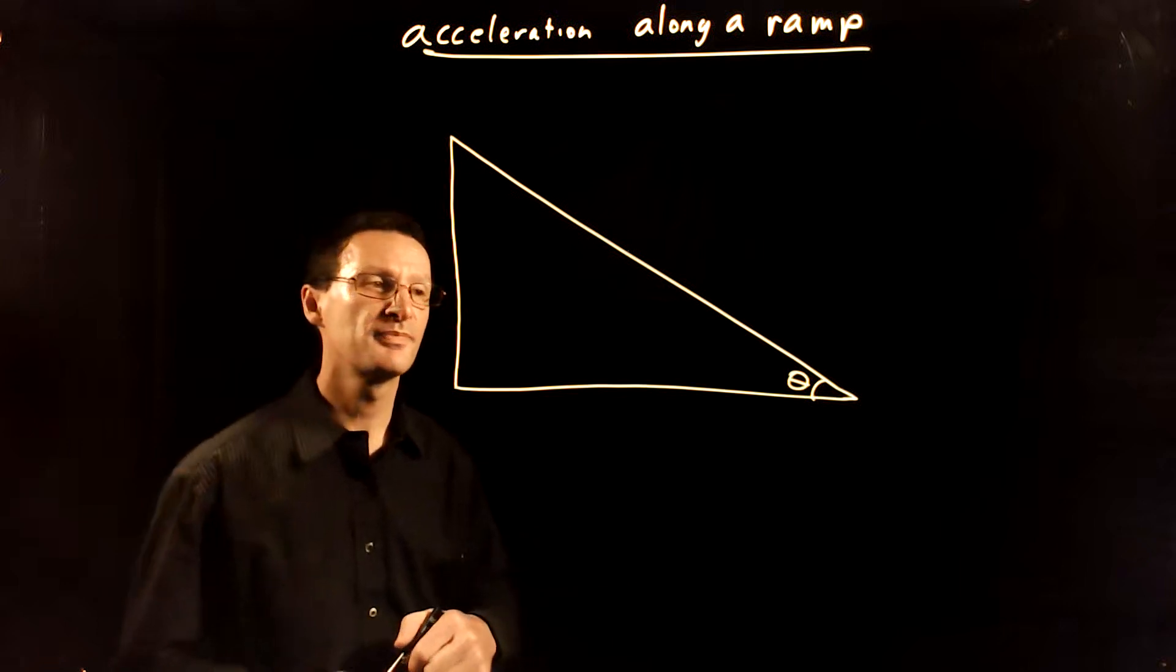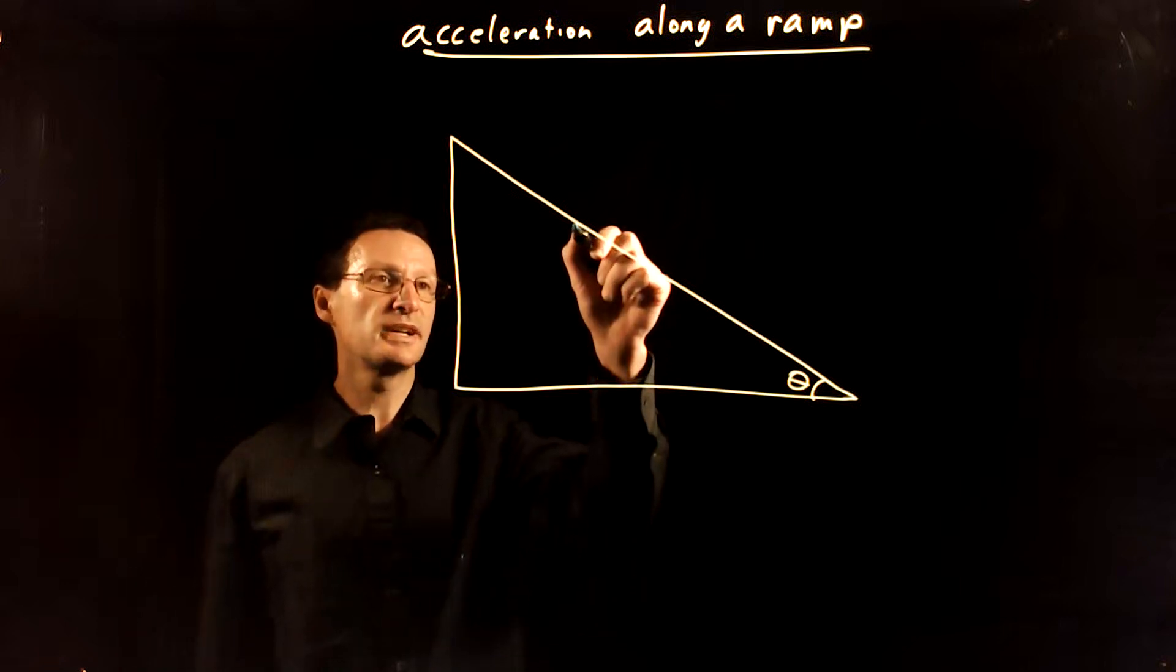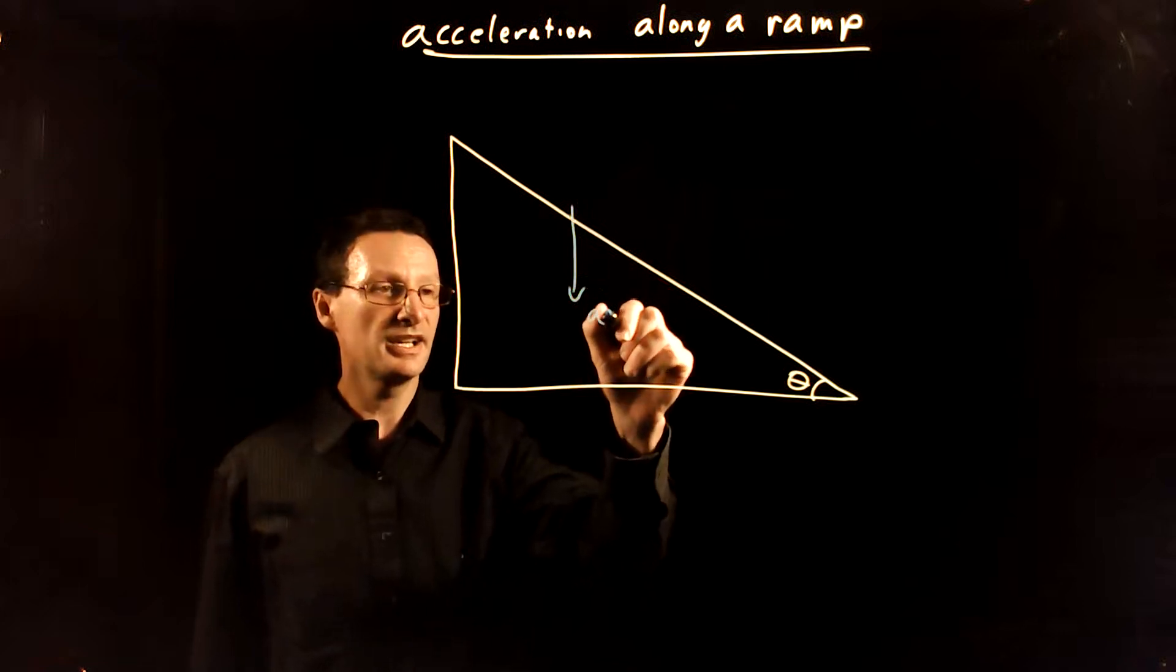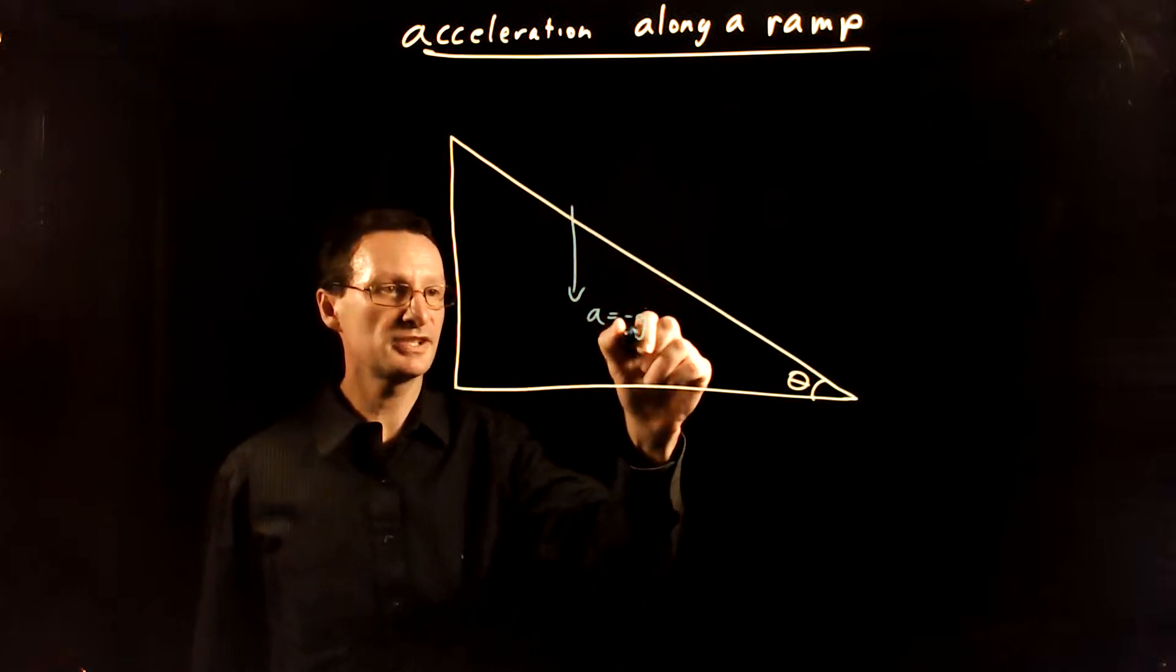So we know that the acceleration in free fall should be down with g, right, negative g down.